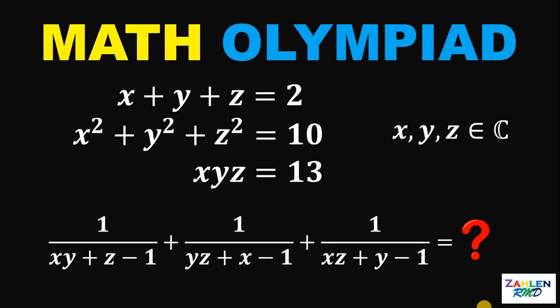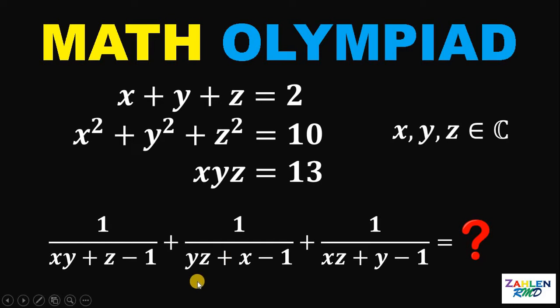Let x, y, and z be complex numbers such that x plus y plus z equals 2, x squared plus y squared plus z squared equals 10, and xyz equals 13. The question is: what is the value of 1 over xy plus z minus 1, plus 1 over yz plus x minus 1, plus 1 over xz plus y minus 1?